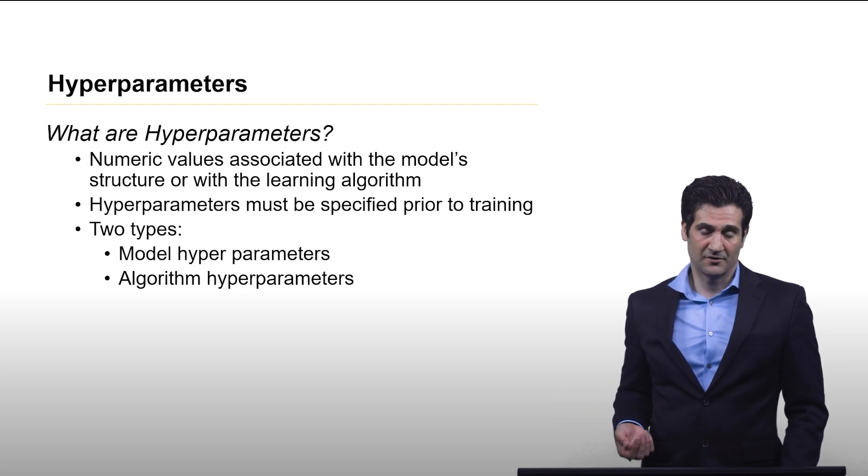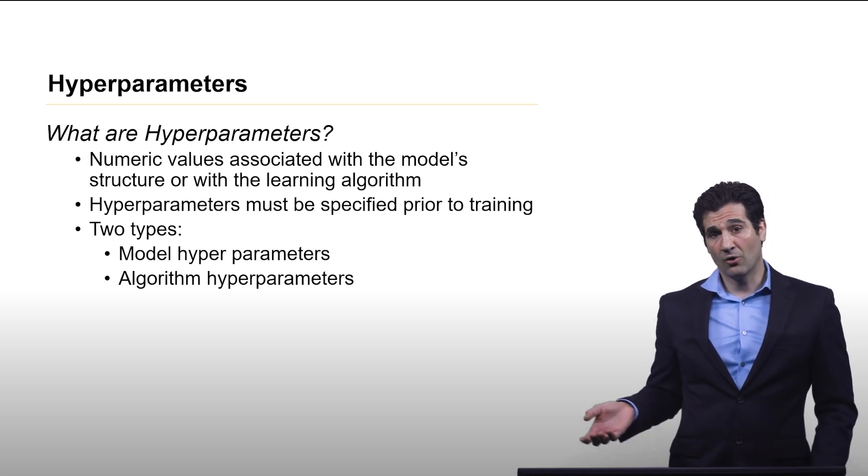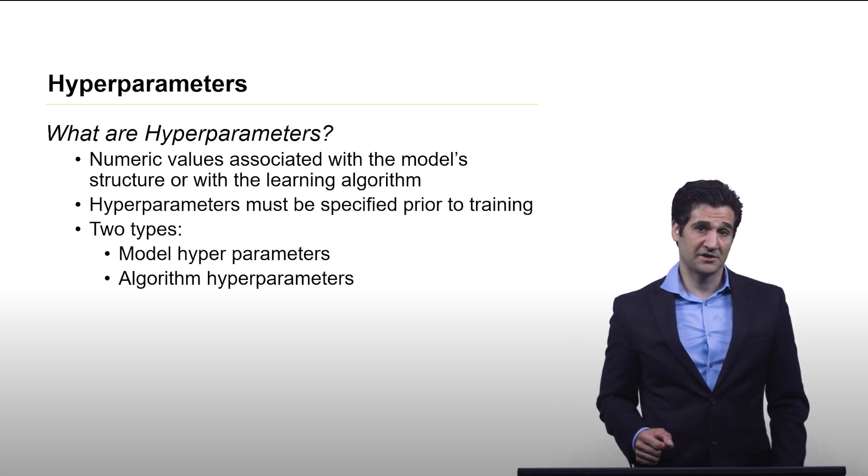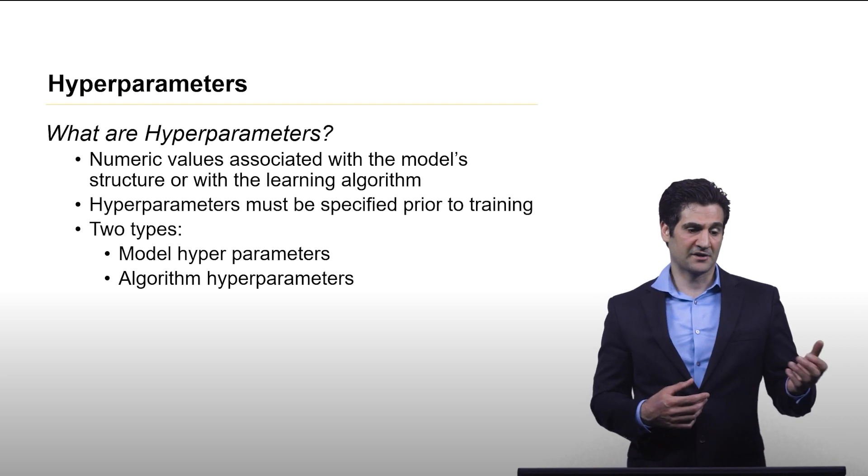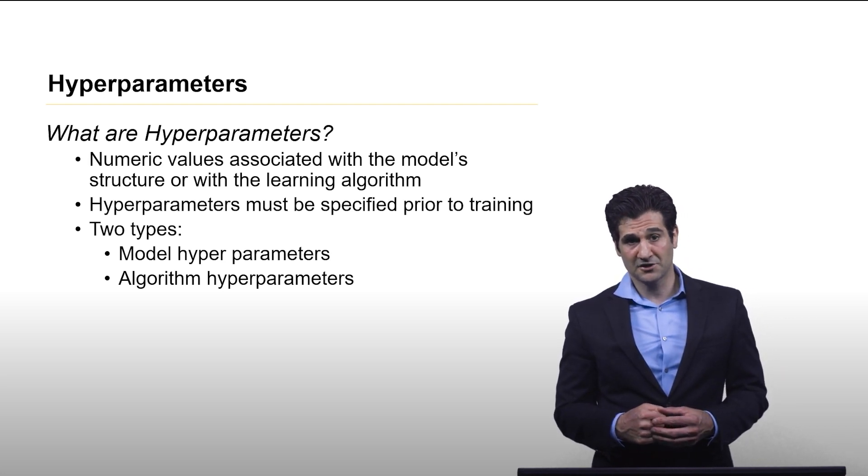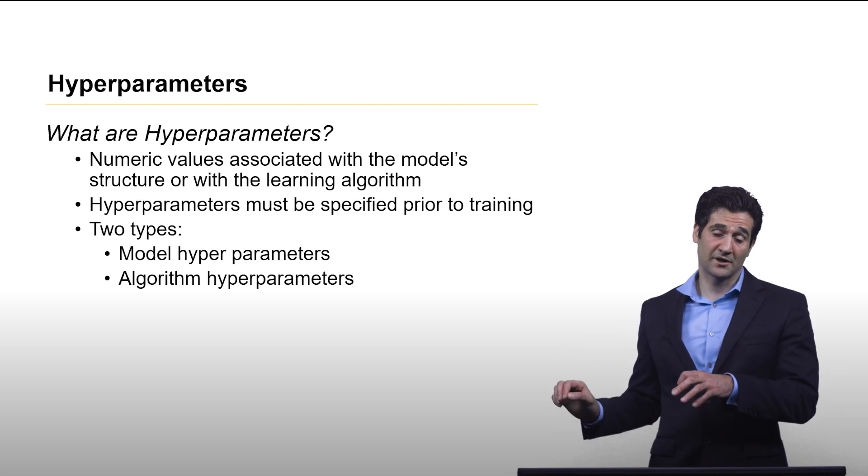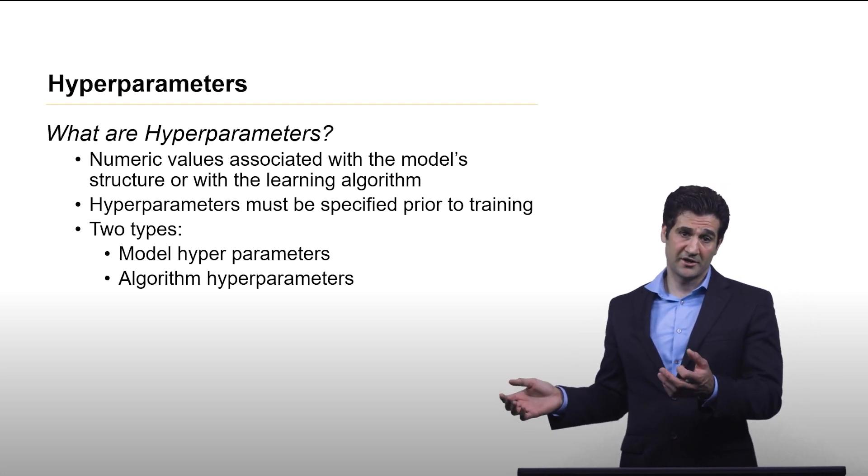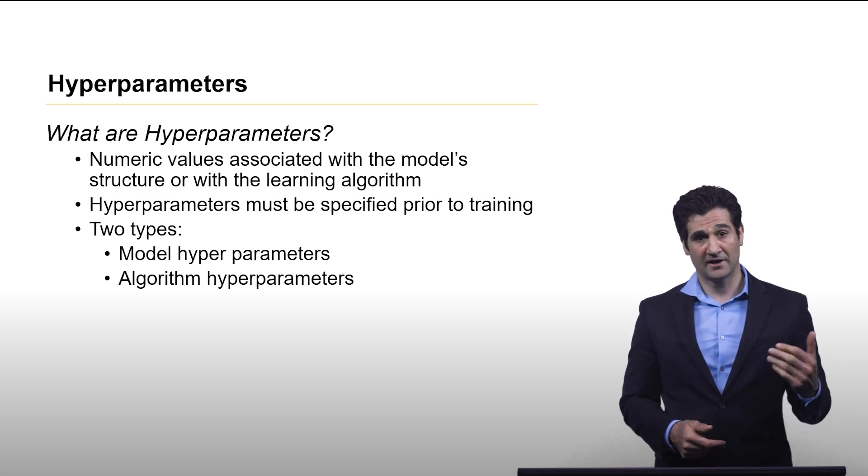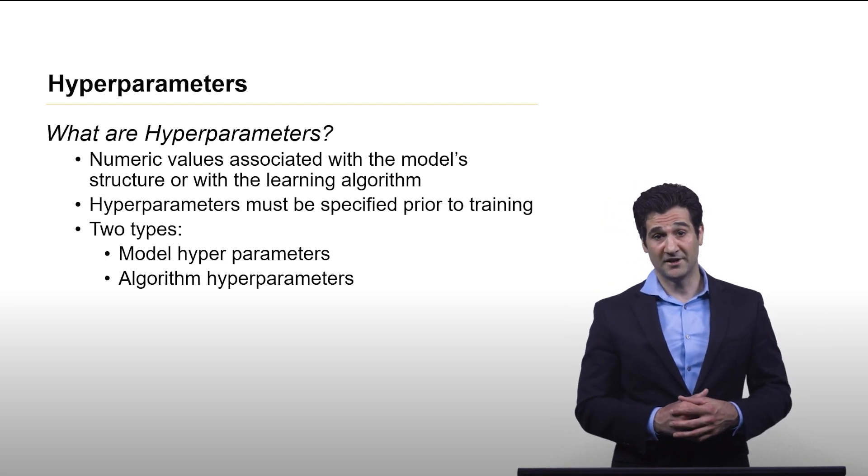Hyperparameters, just to refresh everyone's memory, these are just numeric values associated with the model structure or with the learning algorithm. They are not assigned by the training process. When we think of another type of model, whether it's the slope assigned to a feature in a linear regression model, or if it's a threshold value in a standard decision tree, those come from the training process. We're not talking about that with hyperparameters. We're talking about things that we use to tune the model that affect how that process works. If you recall back to our discussion of decision trees, a very common hyperparameter was the maximum depth of the decision tree.